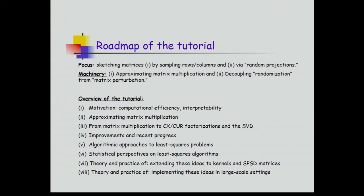Here's the roadmap. We're going to think about sketching matrices by sampling rows or columns via some non-trivial importance sampling distribution, or via a random projection. Think about random projections not just in the Johnson-Lindenstrauss sense, but as essentially rotating to a random basis where the relevant non-uniformity structures are uniformized. There are no large rank-one components in that randomly rotated space.